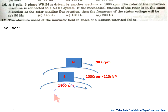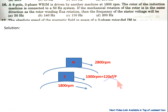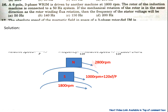The rotor is rotating at 1800 rpm. The rotor magnetic field is supplied by the six-pole, three-phase 50 Hz system, so due to this it rotates at 1000 rpm in the same direction. For synchronization between the two fields, the stator magnetic field must rotate at 2800 rpm.